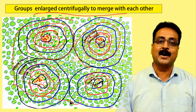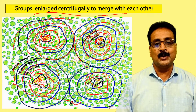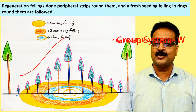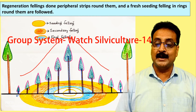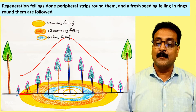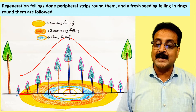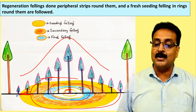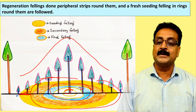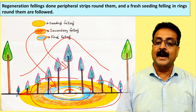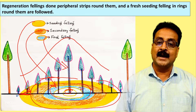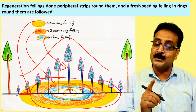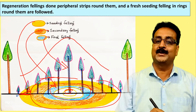The entire compartment is felled where new recruits have been established. You can see in the diagram: seeding felling was done first, then secondary felling in the second phase, and finally the final felling. The regeneration felling proceeds in peripheral strips around the groups. Fresh seedlings come in rings, and slowly they merge with each other as the groups enlarge.